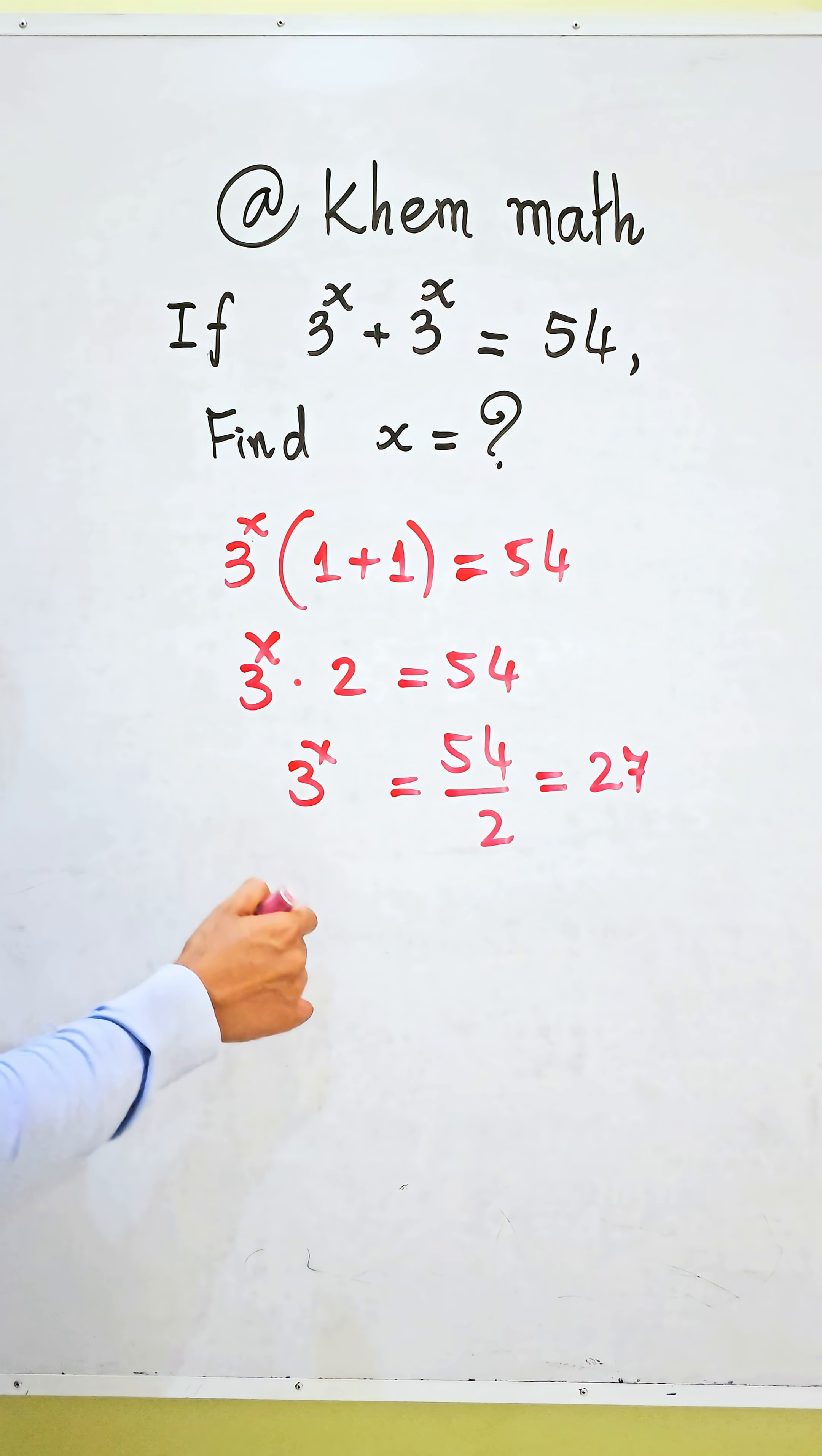Here 3 power of x equals 27. We get 27 equals 3 power of 3. So we can write it as 3 power of 3.